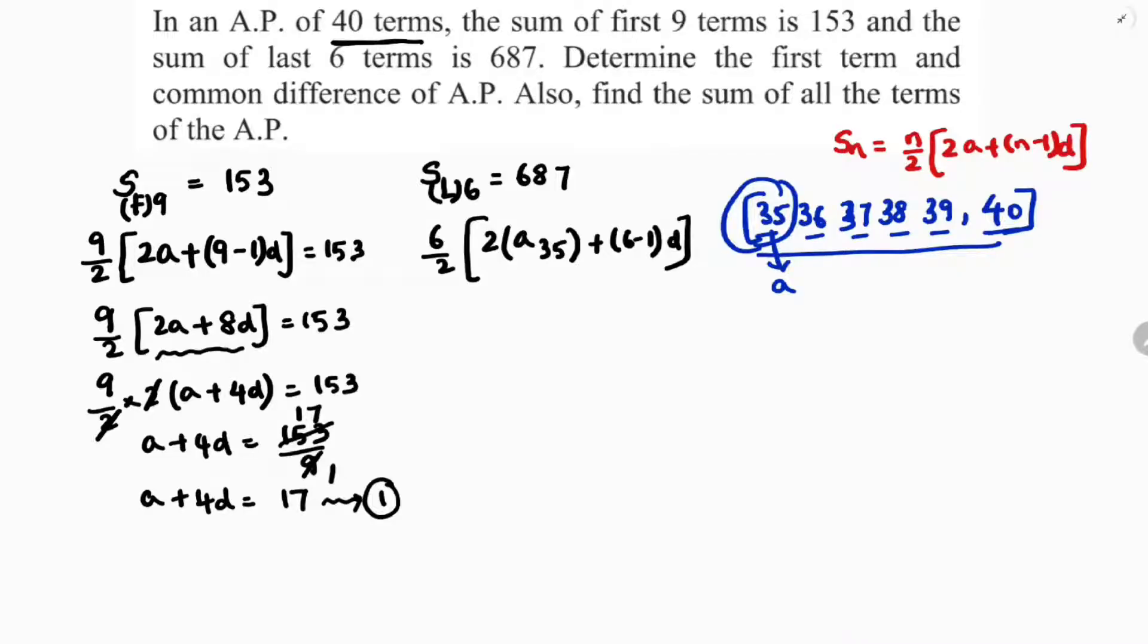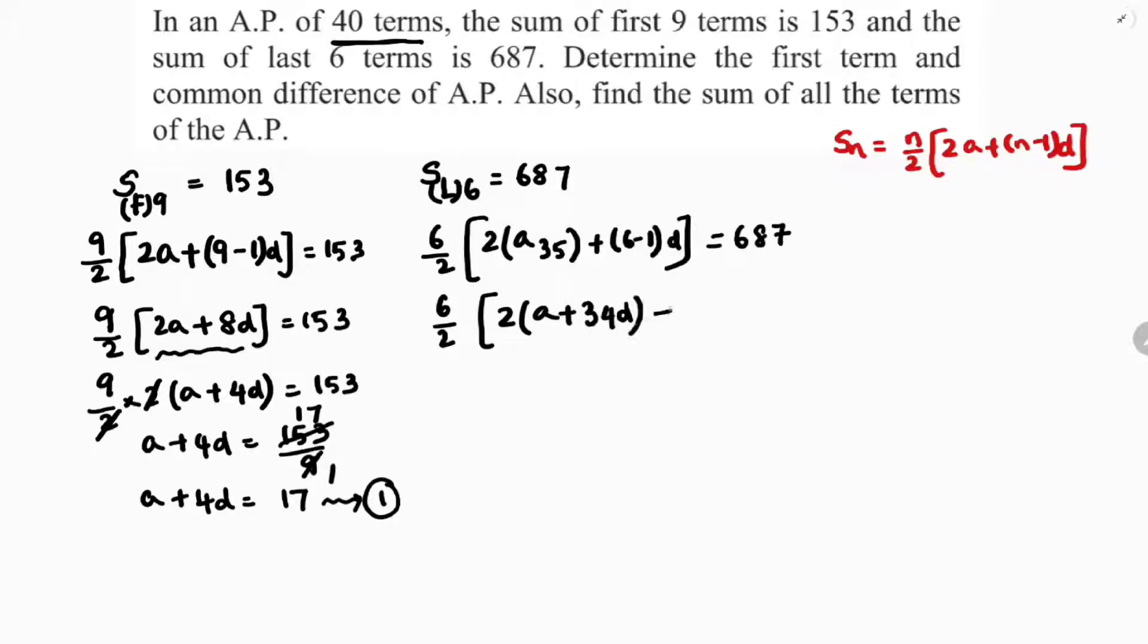When we are taking the last 6 terms, the first term is the 35th term. This value is equal to 687. 6 by 2, 2A, so 2 times A35. A35 is A plus 34D, plus 6 minus 1, 5D, equals 687.